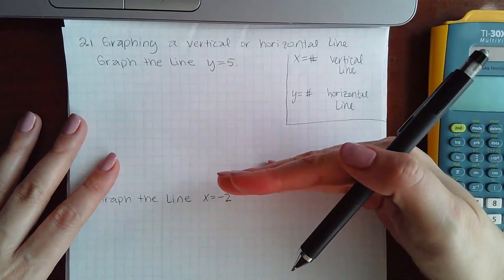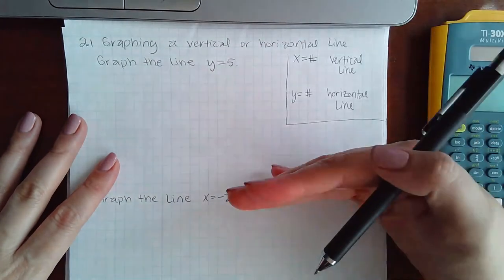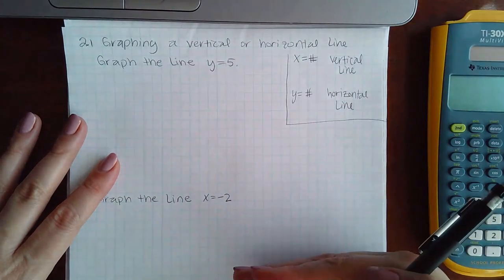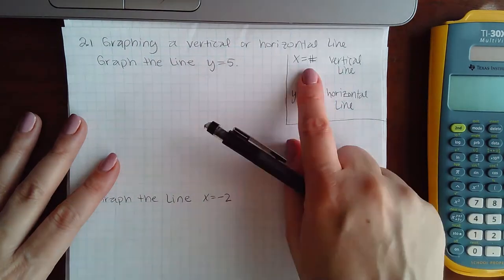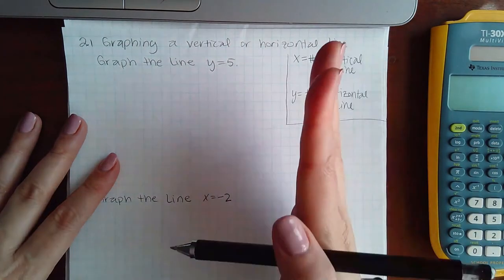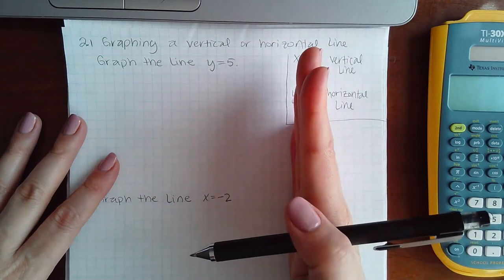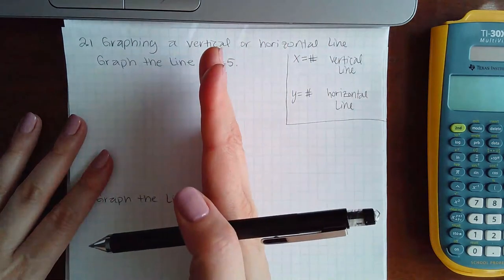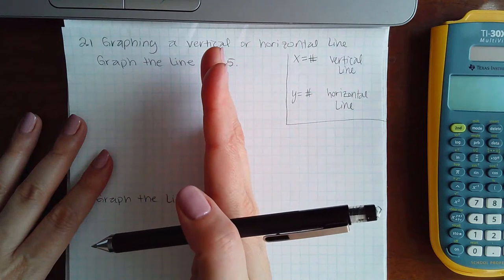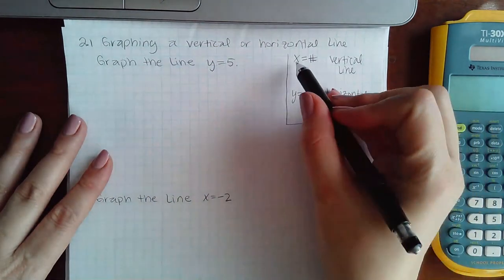So where does that horizontal line occur? It depends on what that y value is. If it's positive, it'll be above the x-axis. If it's a negative y value, it'll be below the x-axis. The same with the vertical lines. If it's positive x value, it'll be to the right of the y-axis. If it's a negative x value, it'll be to the left of the y-axis.